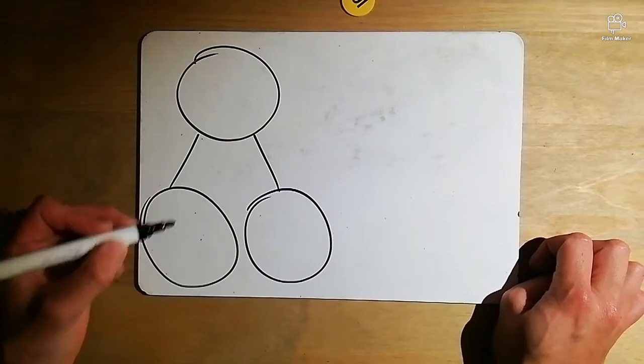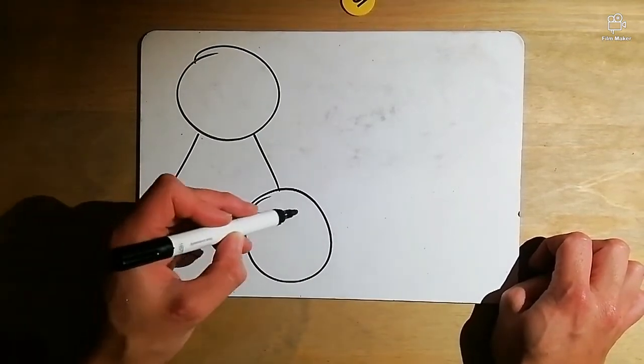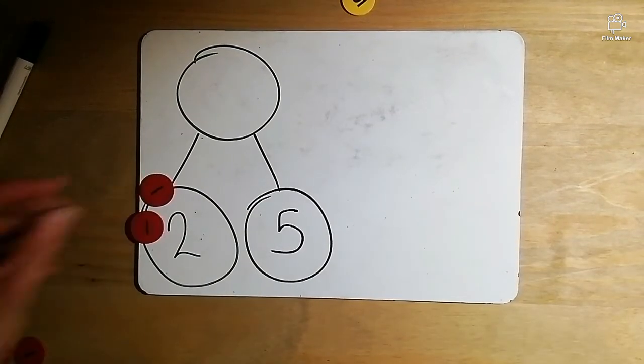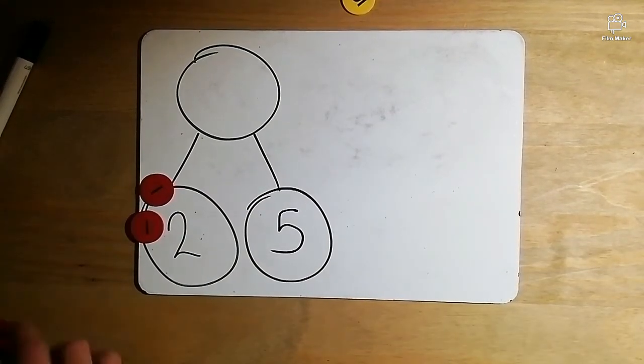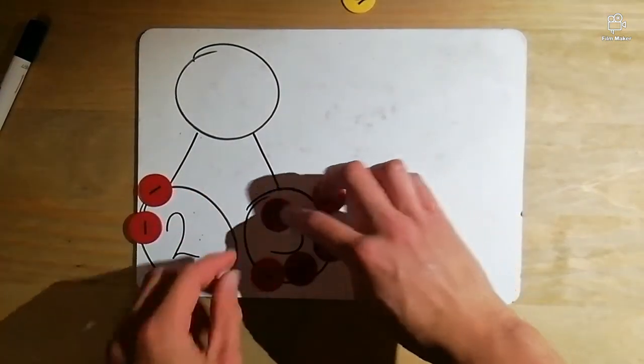So let's start really simply, shall we? Let's start with two and five as our parts. There's two there. Here's our five here.